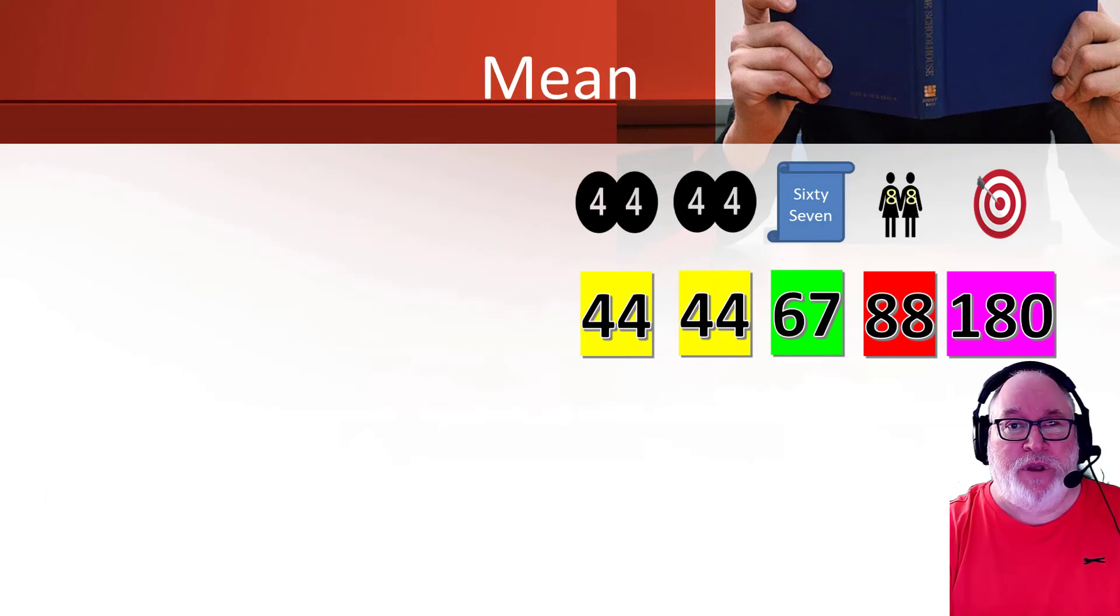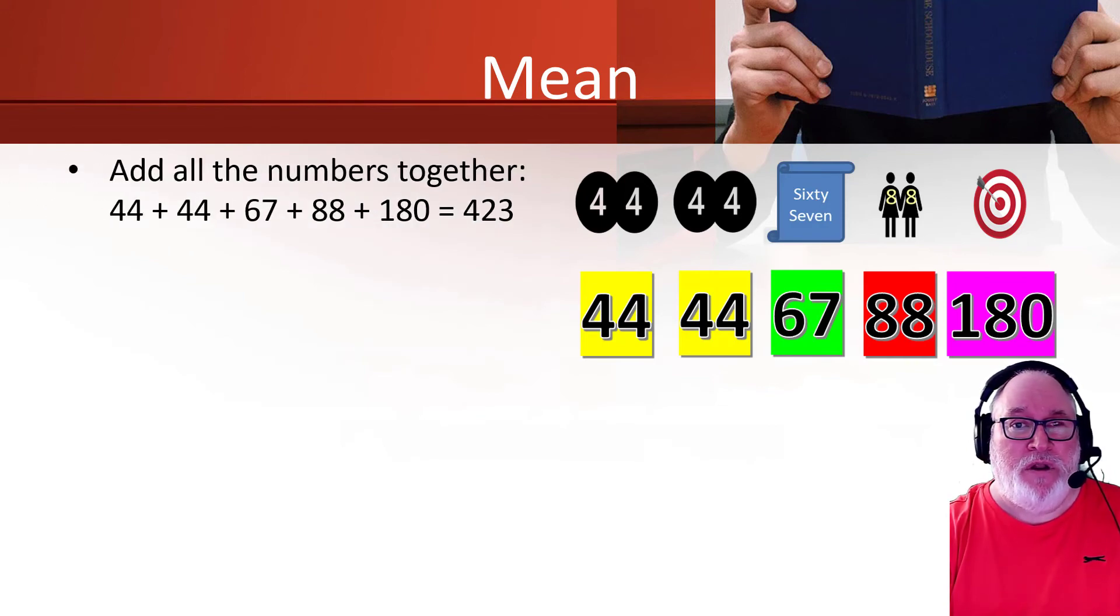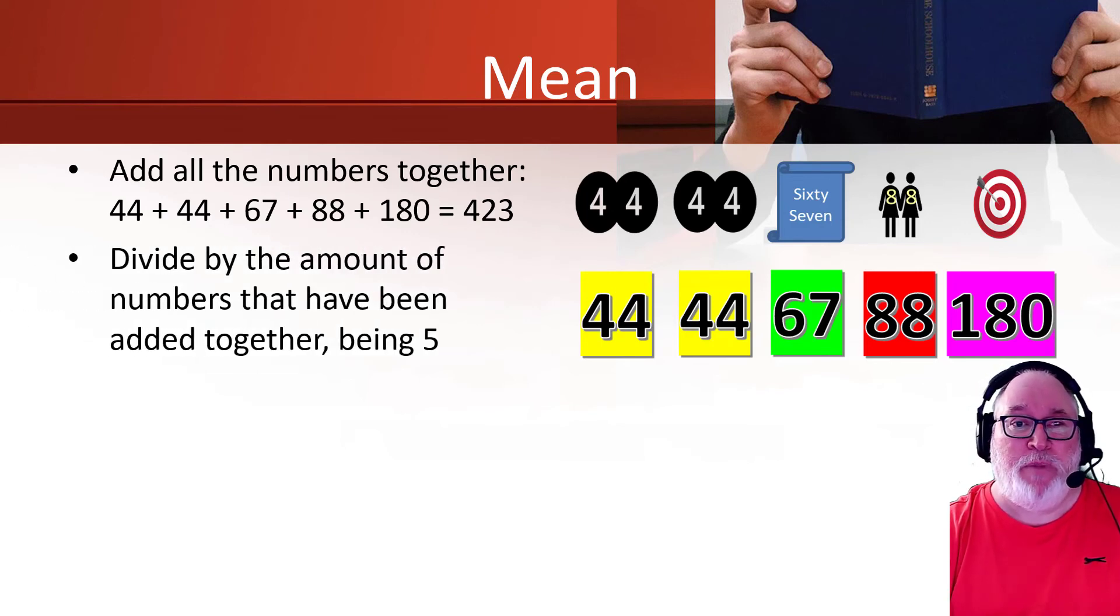Now we're going to look at the mean. Now the mean like I said is you add all the numbers up. So you have 44 plus 44 plus 67, 88, 180 comes to 423 in this instance. And it would be the same as what you do any time. So you add all the numbers that you've got together. You then divide by the amount of numbers you've got.